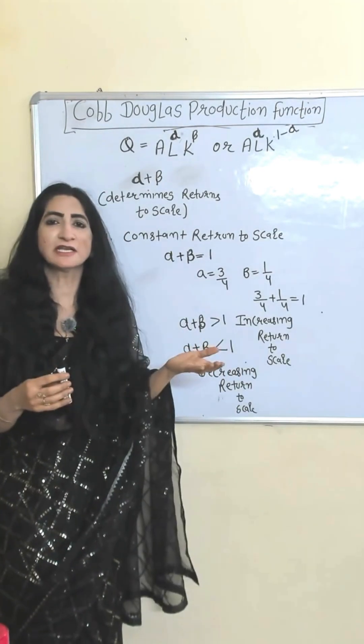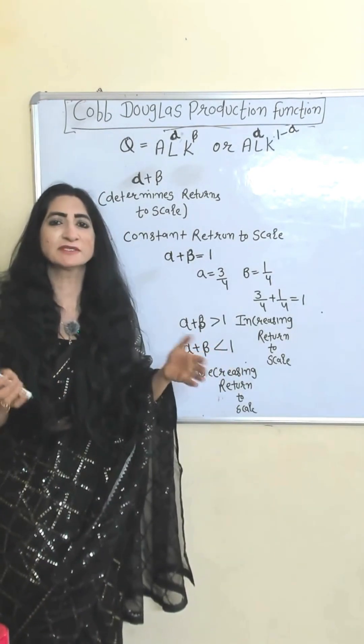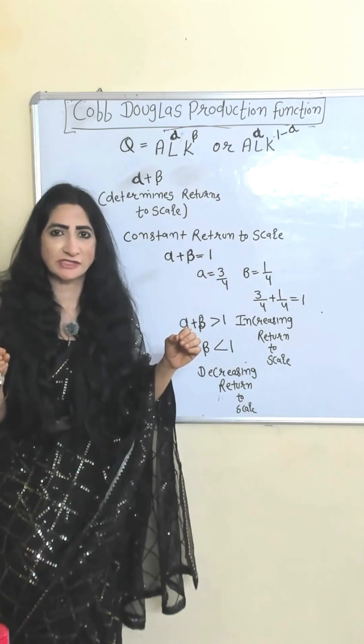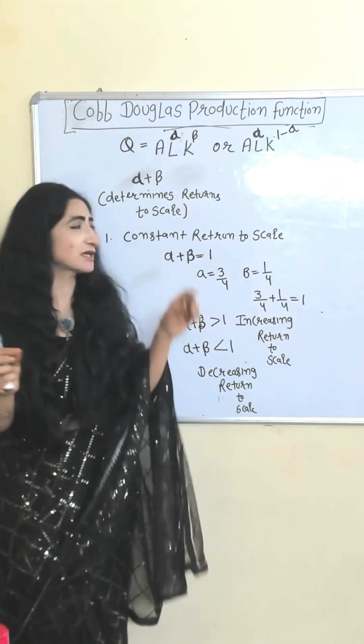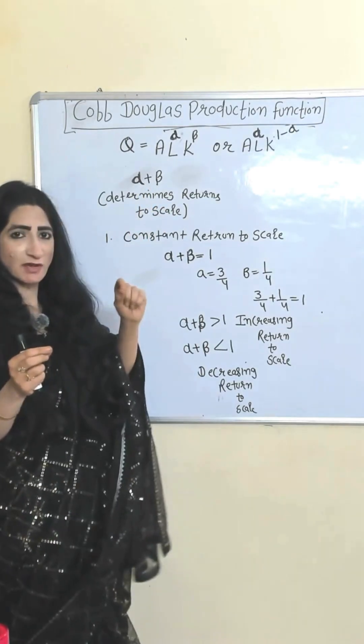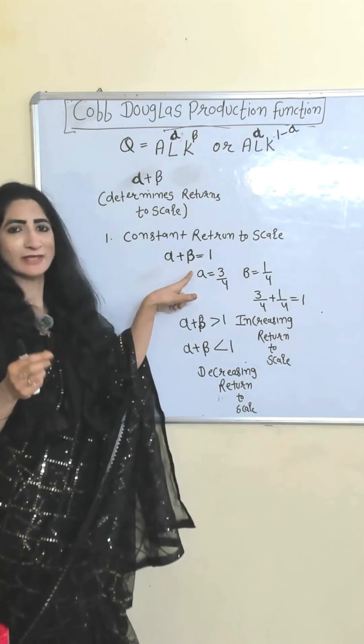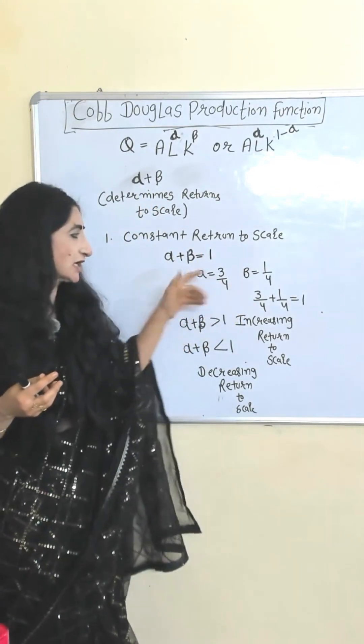Cobb-Douglas production function, linear homogeneous production function. That means receiving constant return to scale. How can you know what kind of return are you receiving? With the sum of alpha and beta. If sum of alpha and beta is equal to 1 that means you are receiving constant return to scale.